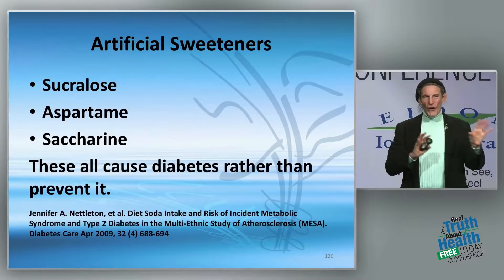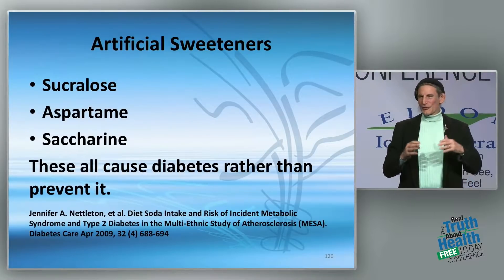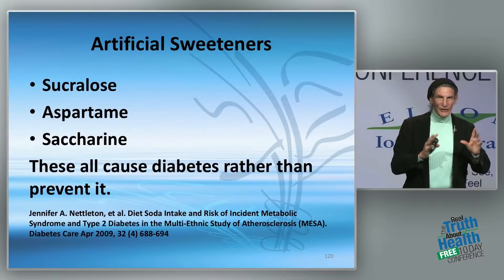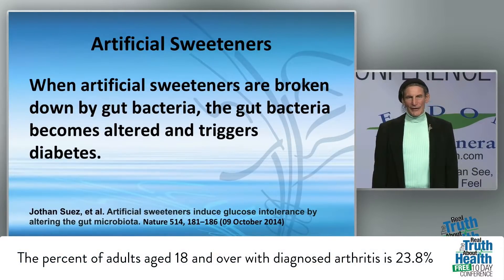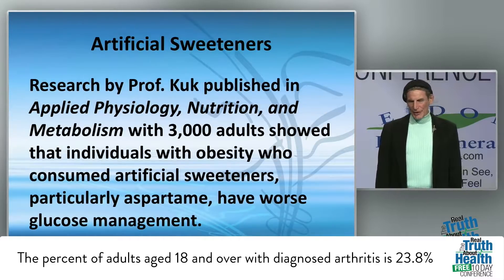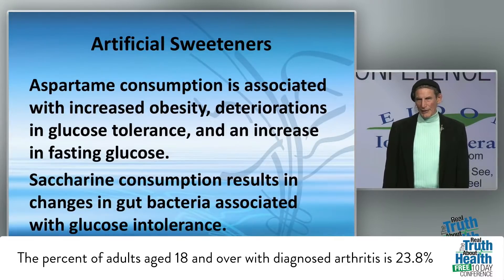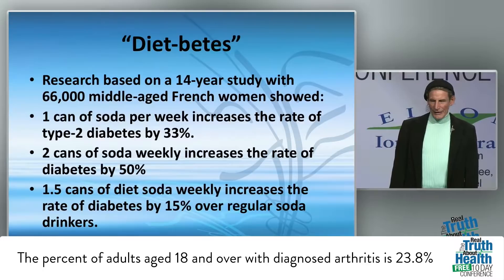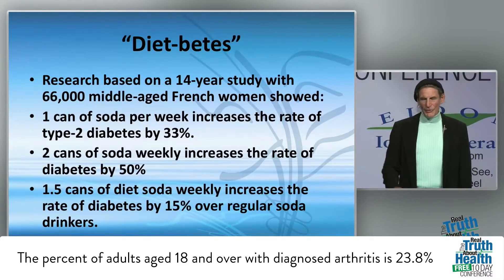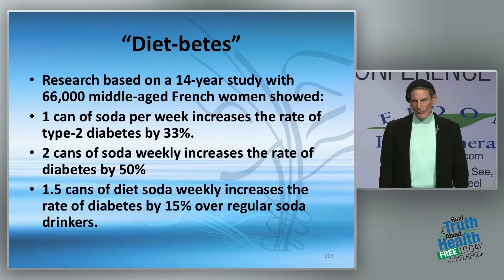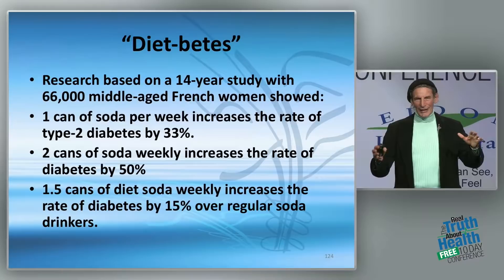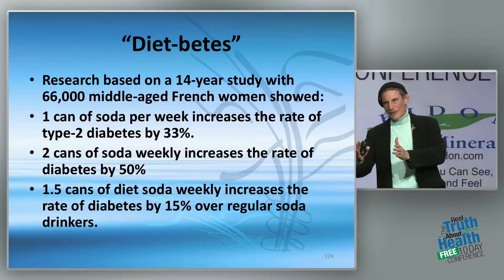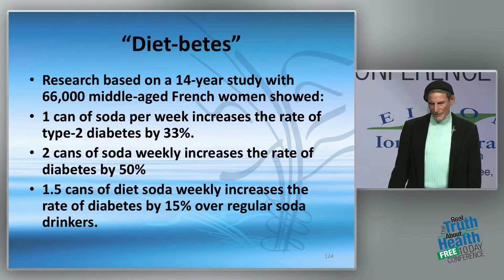In our work in Africa, we recommend going back to clean water rather than soft drinks. Artificial sweeteners confuse gut bacteria and increase the rate of diabetes. Aspartame is a big player. One can of soda per week increases the risk of type 2 diabetes by 33 percent; two cans raises it by 50 percent. With aspartame-based diet soda, the increase is at least 15 to 60 percent higher.